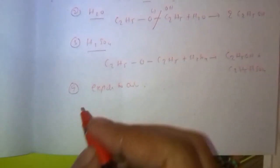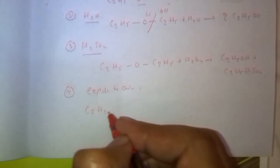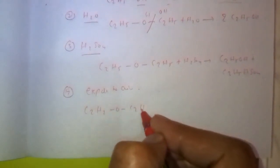Next, exposed to air. They form peroxides. When ethers are exposed to air, they form peroxides, explosive compounds like peroxides are formed. Half O2 gives rise to C2H5-O-O-C2H5. This contains peroxide linkage, so peroxides are formed.